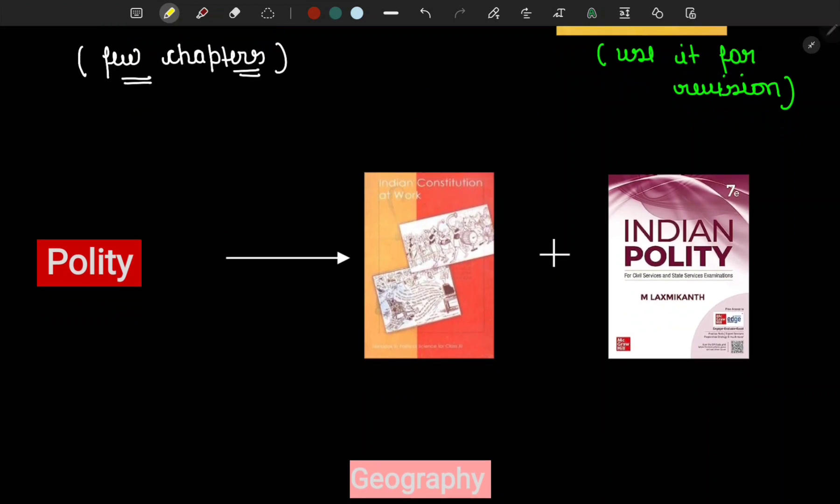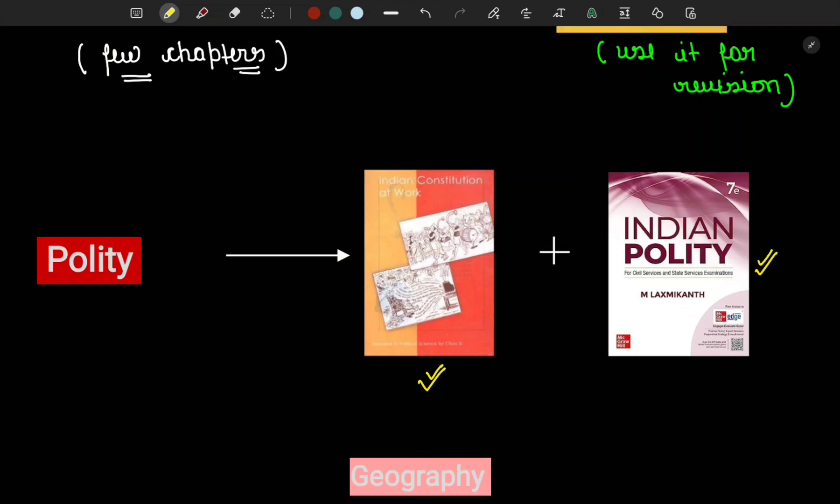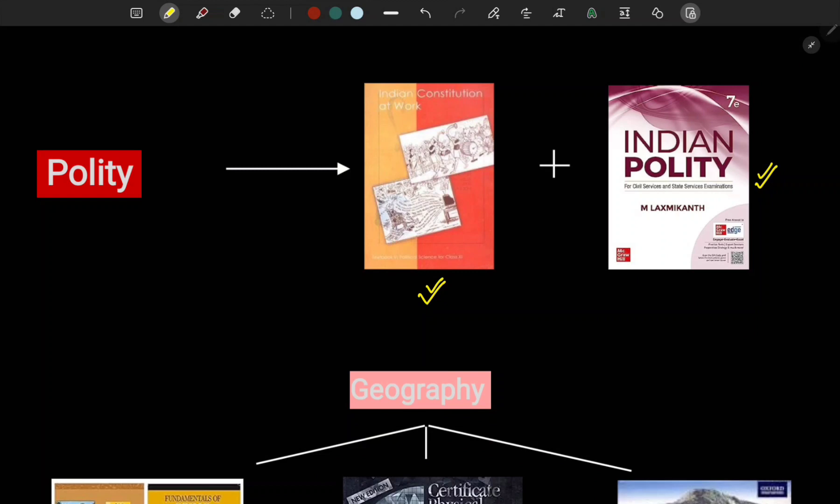For polity, to get basic understanding we have to read Indian Constitution at Work first. Then we follow Indian Polity by Laxmikant. People say that as the paper level came out in prelims, Laxmikant is not so beneficial, not much input-output ratio. But according to me, this is a very good resource to cover Indian politics. You will need deep understanding along with knowing what is written in particular articles. Laxmikant is the single source for polity from prelims perspective.